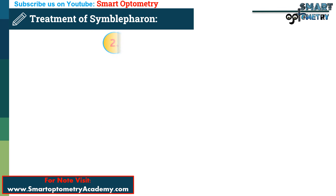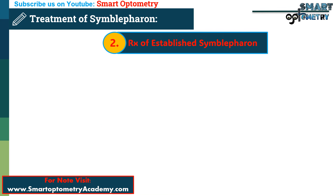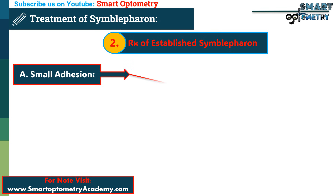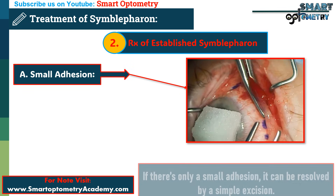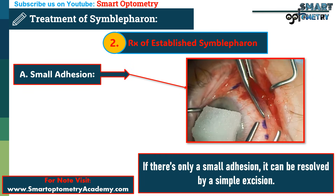2. Treatment of established Symblepharon. When Symblepharon is already established, treatment depends on the extent of the adhesions. a. Small adhesion. If there is only a small adhesion, it can be resolved by a simple excision.